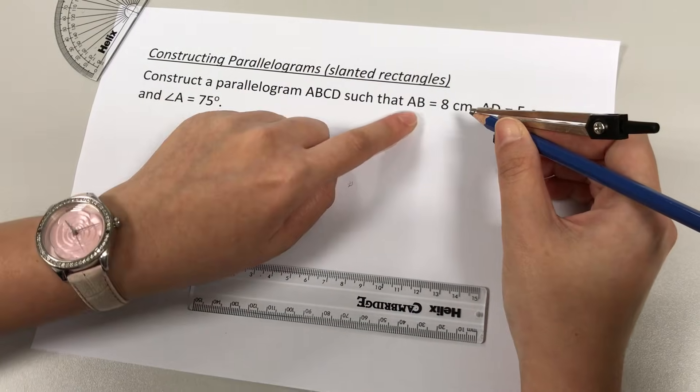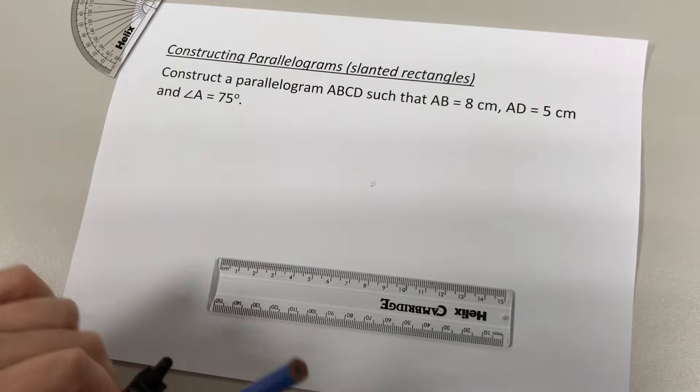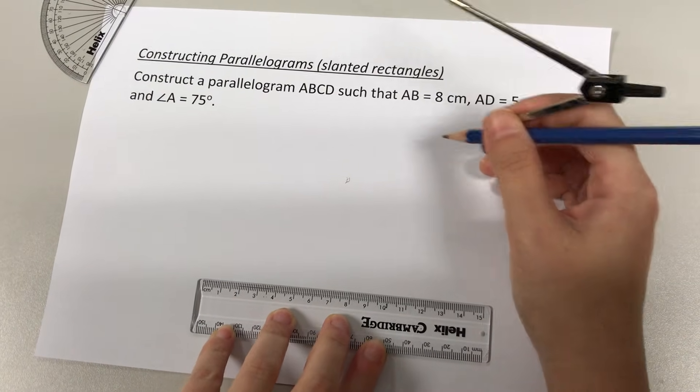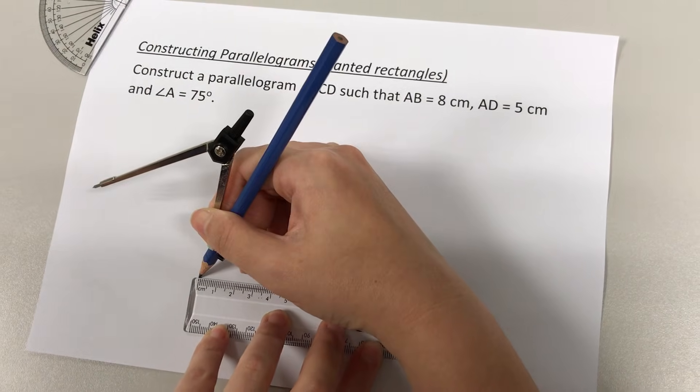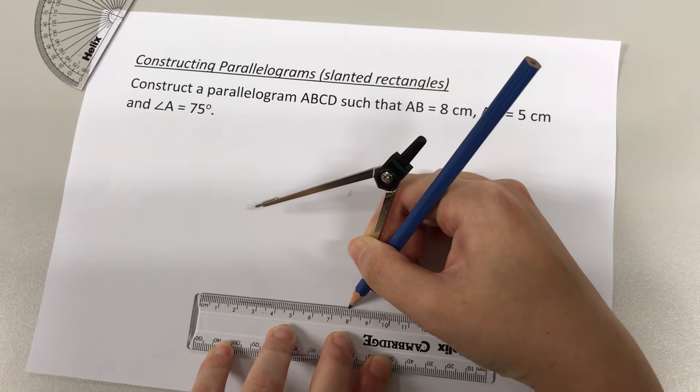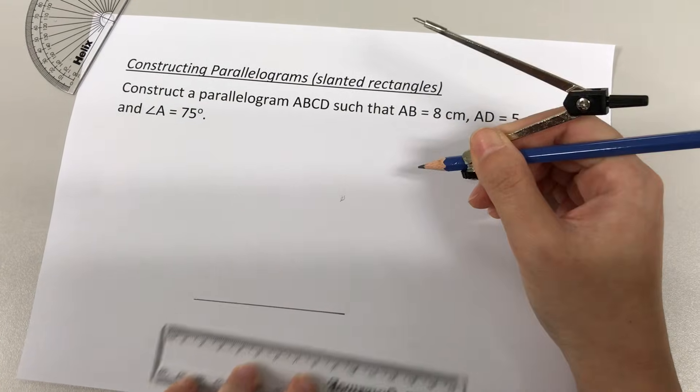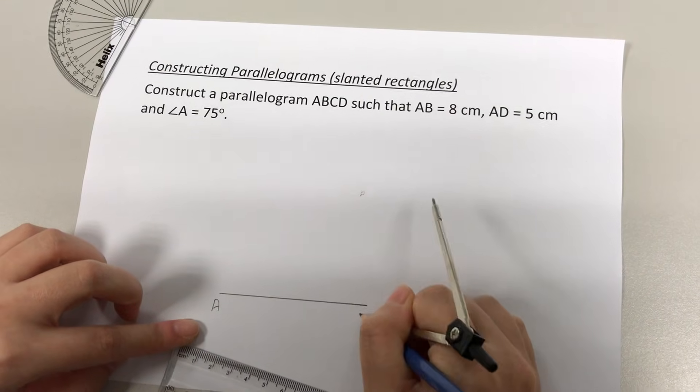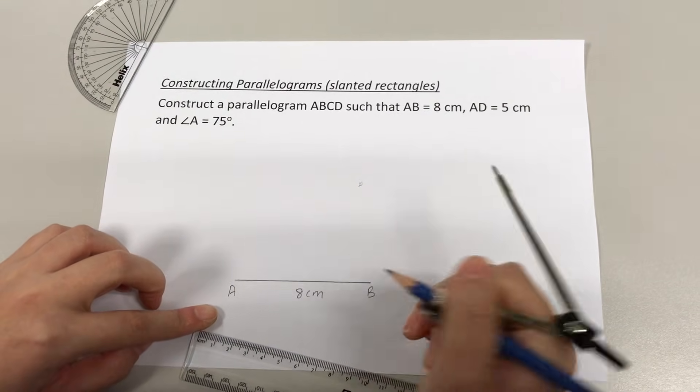Let's make use of AB 8 cm to draw our straight line using the ruler. I will be drawing 8 cm using my ruler. So that is an 8 cm line which I'm going to label it as AB 8 cm.